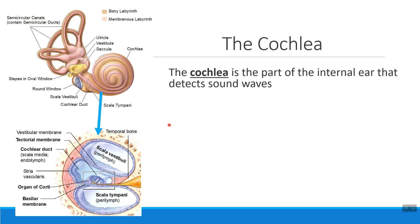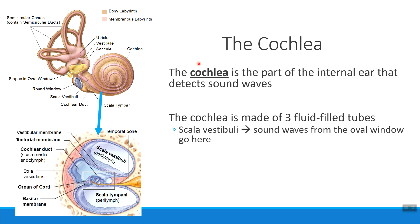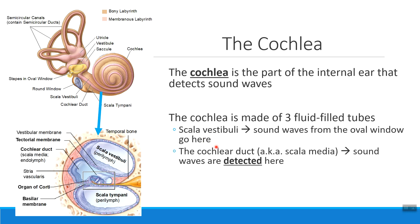The internal ear, where we hear sounds, is called the cochlea. The cochlea is actually made out of three fluid-filled tubes. Only one of those tubes is where we actually have the cells that hear things; the other two tubes are there to transport sound waves. The first tube that sound waves go into when they come from the middle ear is called scala vestibuli — that's the first tube where the sound waves go. Sound waves will bounce through scala vestibuli until they find the part of the cochlear duct where they can actually be detected.